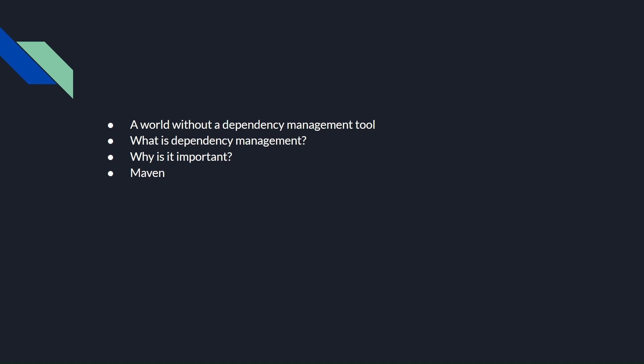Now that we understand dependency management, let's talk about why it's important. It speeds up development because we don't have to write everything on our own or reinvent the wheel — we're using libraries that already exist, owned and tested by different people. Dependency management tools like Maven or Gradle also help ensure applications are secure and stable. When a new issue is discovered in a dependency, that team fixes it and releases a new version, and with Maven or Gradle we can quickly update to get that fix.